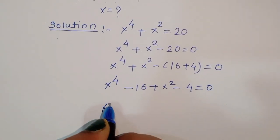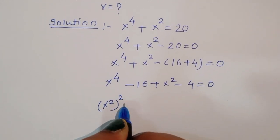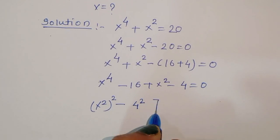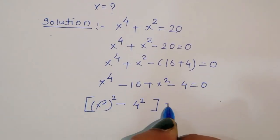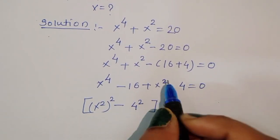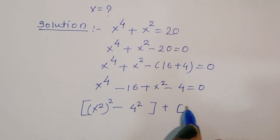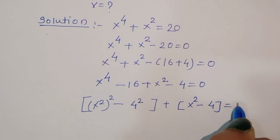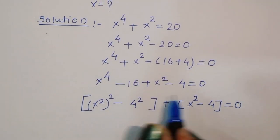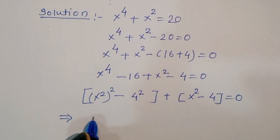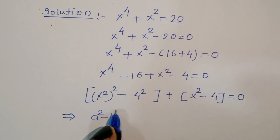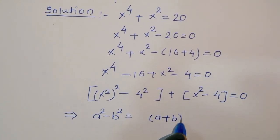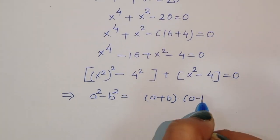Now, x square whole square minus 4 square plus x square minus 4 is equal to 0. We know the formula: a square minus b square is equal to a plus b times a minus b.